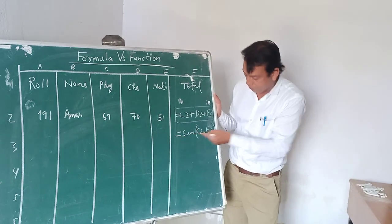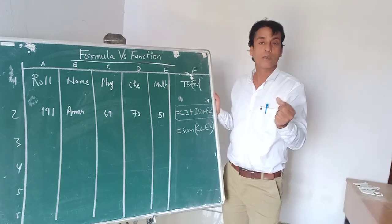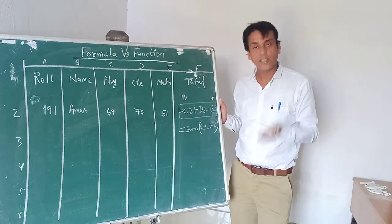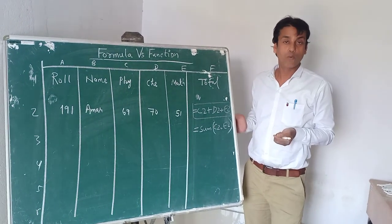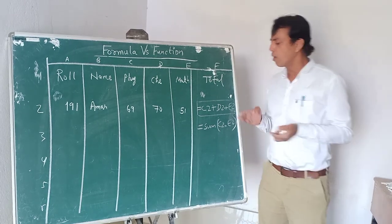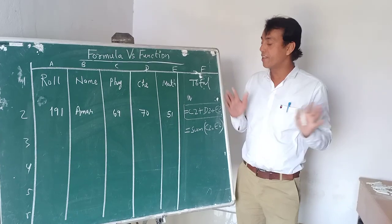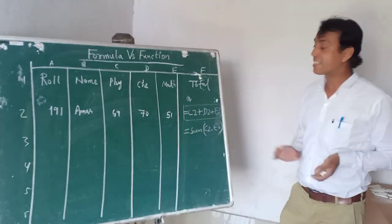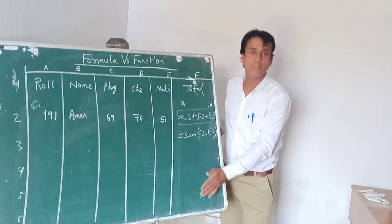Whereas if you look at the function, the function is identified by a name. Sum is a function, average is a function, min is a function, max is a function. There are hundreds of functions available for large tasks, whereas the formula is for small tasks. We have a lot of differences between formula and function.